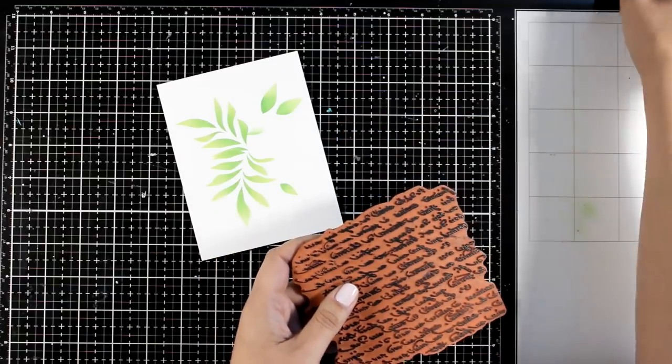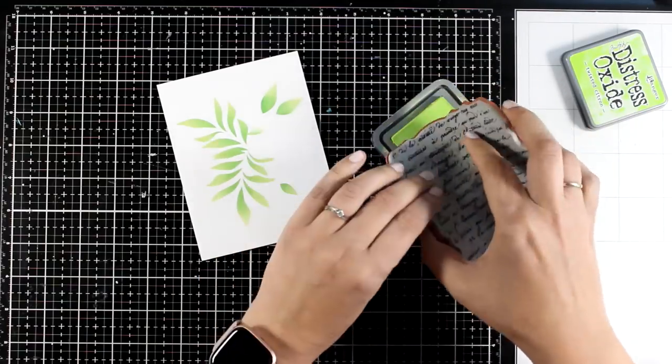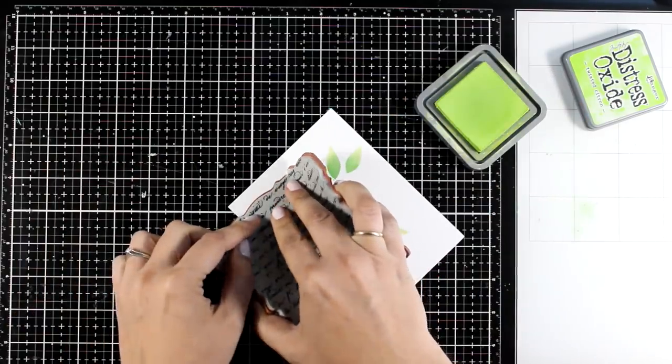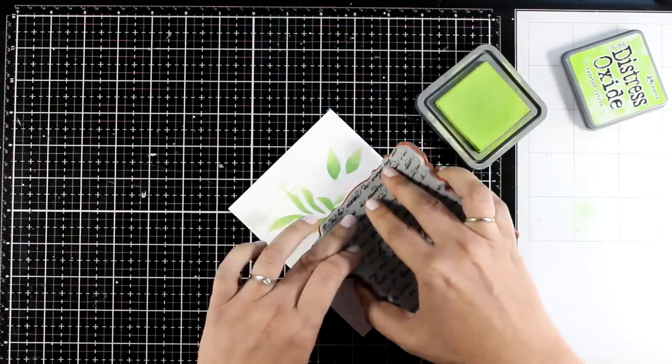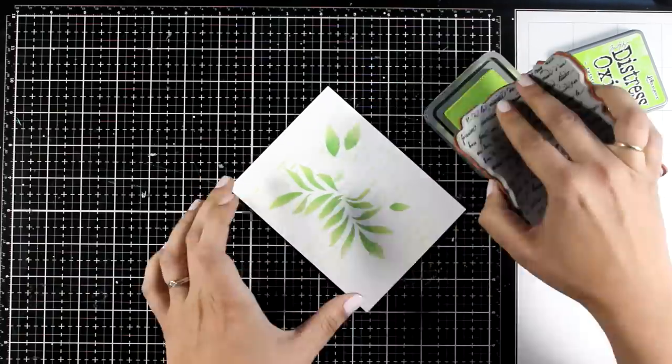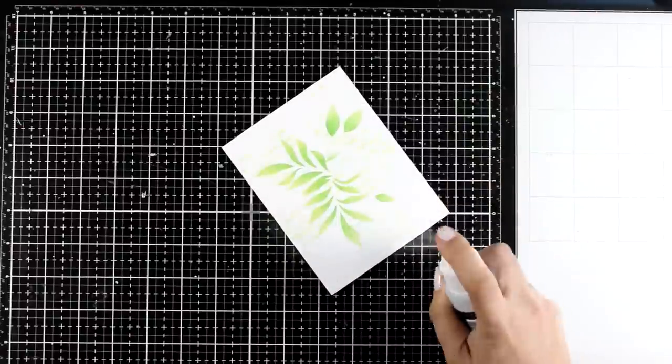Now since this background is going to be loose and have more of a mixed media look and feel, I decided to do some stamping on the background. So I just grabbed one of my text stamps, and instead of using here my distress ink, I'm using oxide ink just to show you that this technique works with both types of inks. So I'm just randomly adding some text at the background.